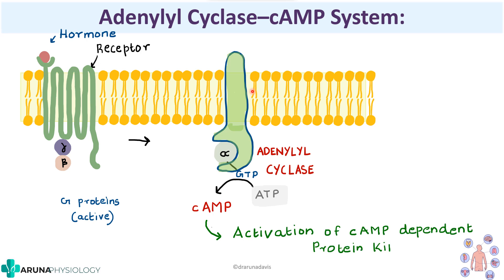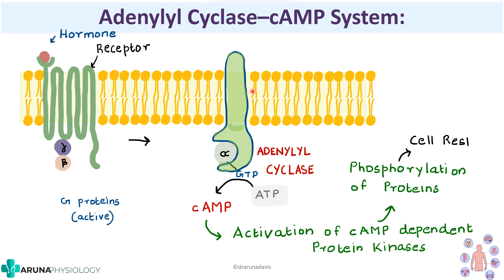This cAMP will cause activation of cAMP-dependent protein kinases. Protein kinases phosphorylate proteins, which in turn causes cellular response. Basically, for cellular response we need phosphorylation of proteins, which activates them. For phosphorylation we need protein kinases, and this is done by cAMP — it activates cAMP-dependent protein kinases, which cause phosphorylation of proteins and thereby cellular response.